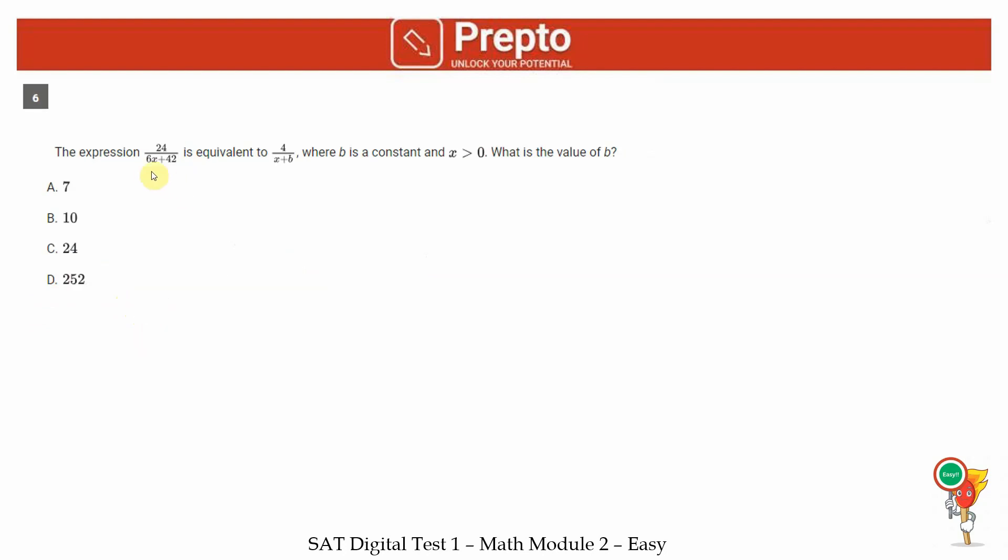Sixth question, this expression is equivalent to this expression. So 24 over 6x plus 42 equals 4 over x plus b. What have we done? We have taken the numerator and divided it by 6 to get 4. We now have to similarly take the denominator and divide that by 6. If you divide 6x plus 42 by 6, you get x plus 7. Comparing it with x plus b, we get that b has to be equal to 7. Hence, we are looking at option A.